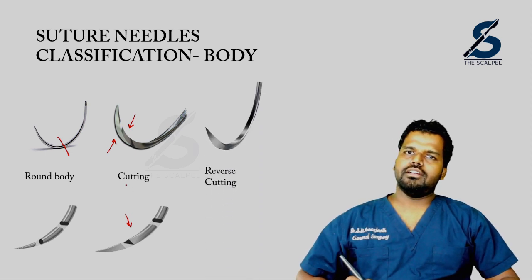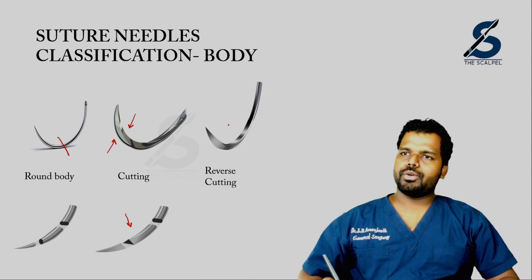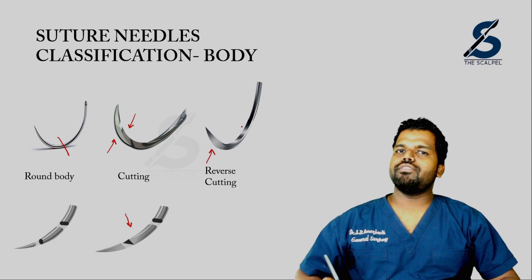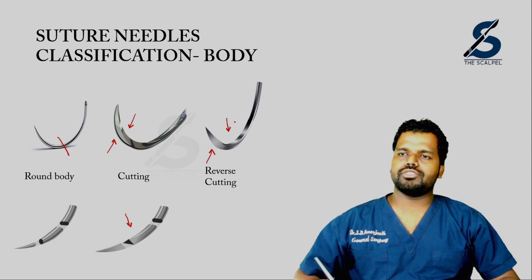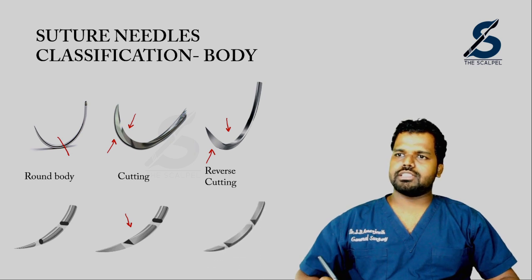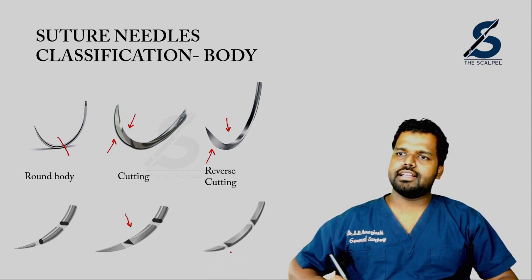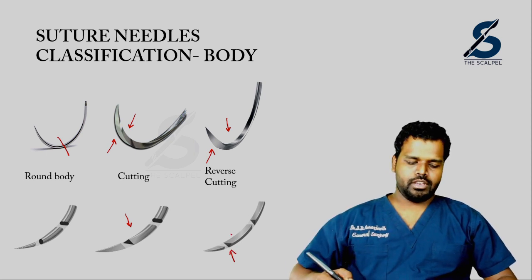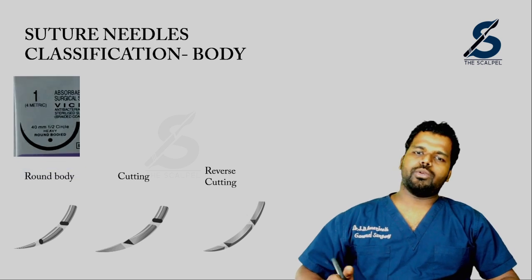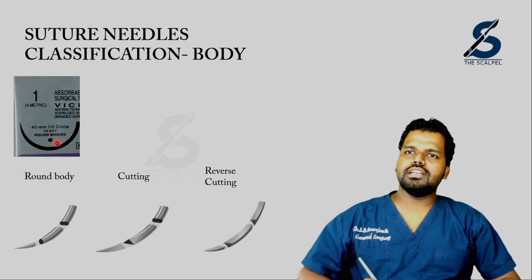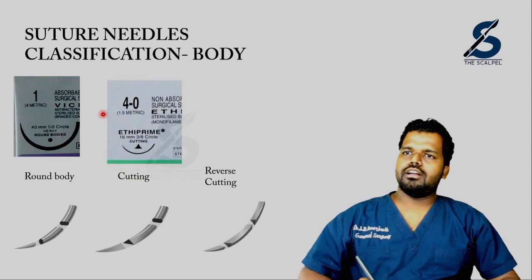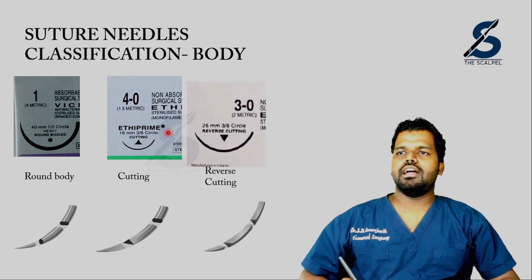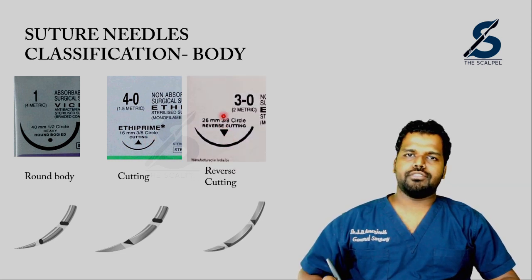In contrast, with a reverse cutting needle, the sharp cutting edge is on the convex surface of the needle, and the concave surface is flat. When you take a cross section, you see a triangular shaped cross section with the apex pointing downwards. So that is why you see a circle for a round bodied needle, a triangle with apex pointing upwards for a cutting needle, and a triangle with apex pointing downwards for a reverse cutting needle.